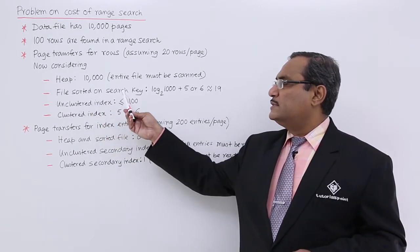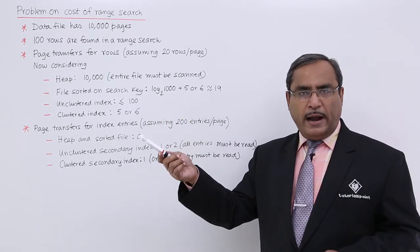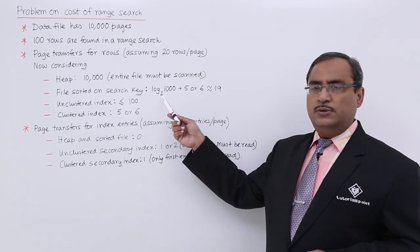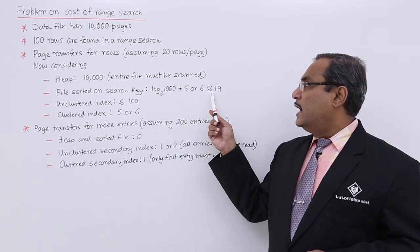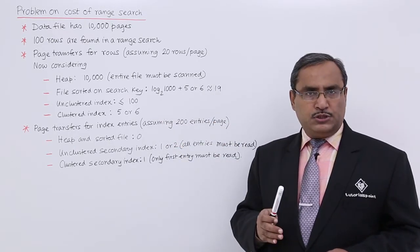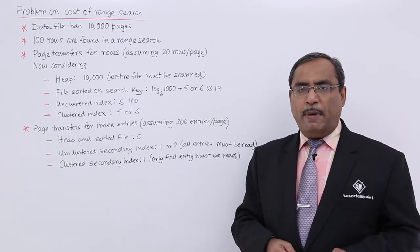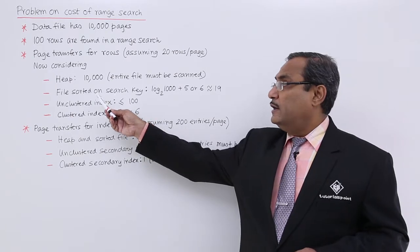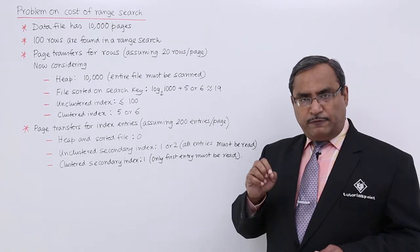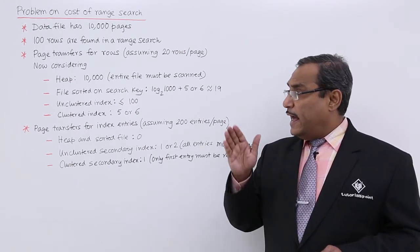In case of sorted file on the search key, then we are having the complexity where we will be applying the binary search. The complexity will be log of 10,000 to the base 2 plus 5 or 6 and it will be coming approximately 19. This is our log of n to the base 2, n is the number of pages here, because we are applying the binary search because this is a sorted file on the search key.